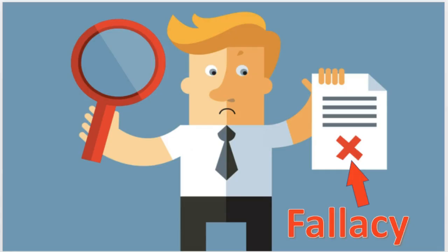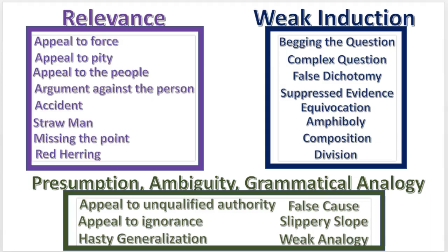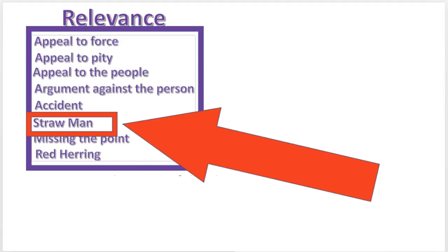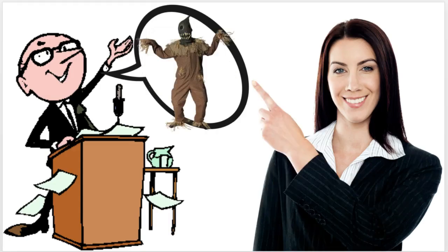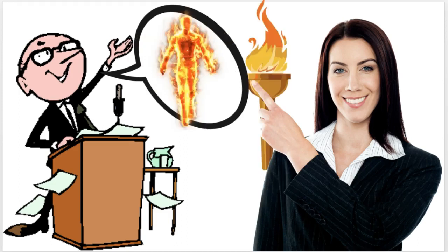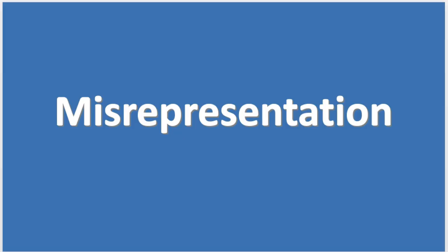As you know, a fallacy is a defect in an argument. Here are 22 informal fallacies, divided into three categories. The straw man fallacy is when an arguer distorts another person's argument in order to make it easier to attack. It's usually a more extreme version of the original argument. Simply put, it's a misrepresentation.